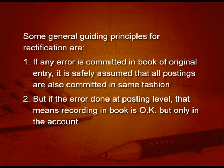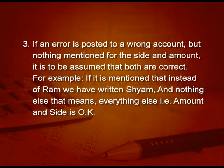Next point: if the error is done at the posting level, meaning recording in the original book is okay but the problem is only in one account. For example, if we recorded 1,500 in the sales book but while posting wrote 150, that means one part — sales — is okay, but the customer account is wrong. This is a one-sided error; the trial balance will not tell you.